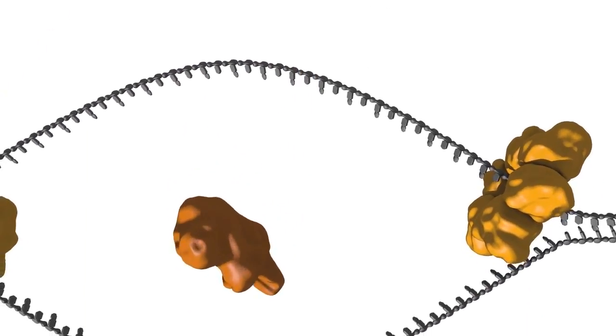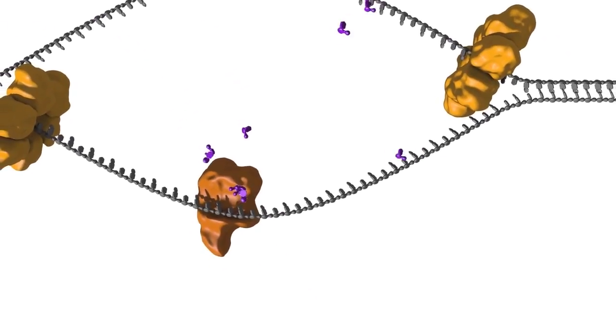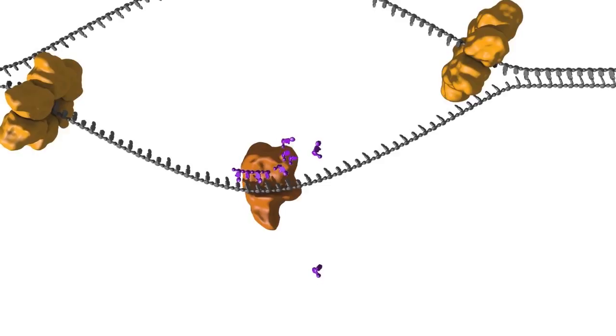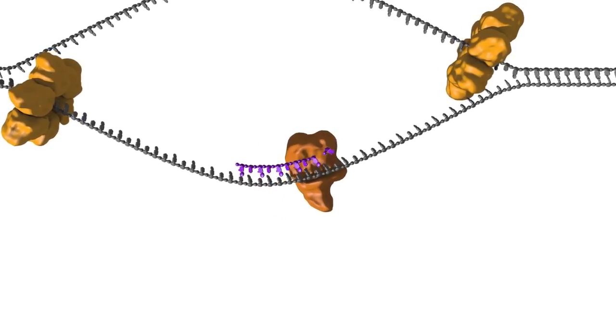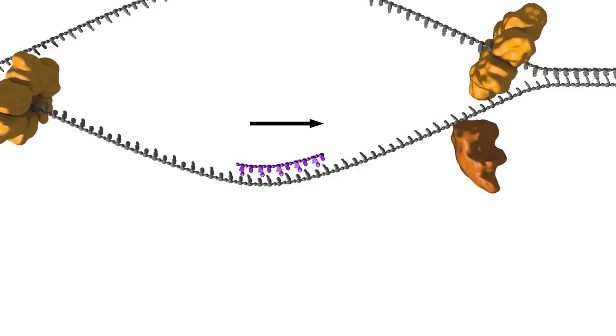Primers are made by an enzyme called primase. Once access to the single strands of the DNA has been obtained, the primase is loaded onto the DNA. The primase synthesizes a small stretch of RNA by copying the sequence of nucleotides on the template strand. A DNA polymerase will later elongate this small RNA stretch.